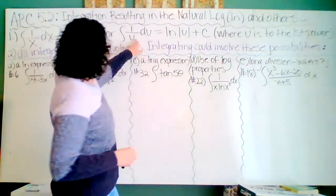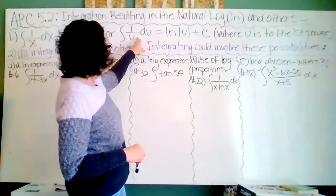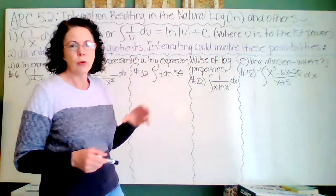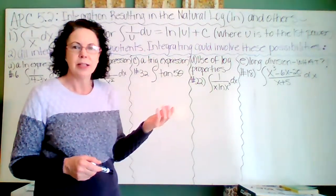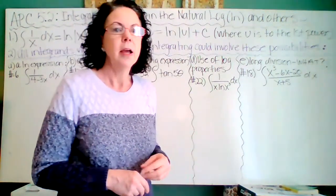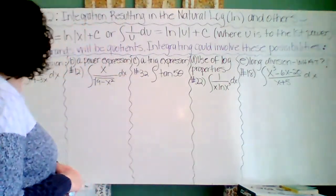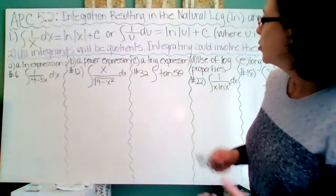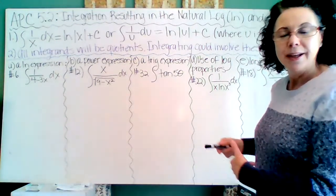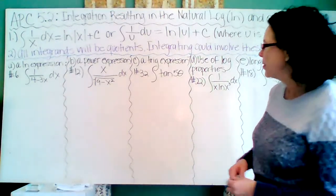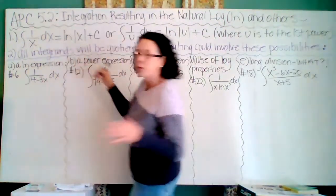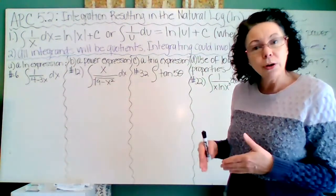We use the power rule if we had u squared — integrating u to the negative 2 and things like that. But when your denominator in total is to the first power, that's when it's going to result in the natural log. So section 5.2 covers integration that results in the natural log, and other quotients that result in non-natural logs using power rules instead.